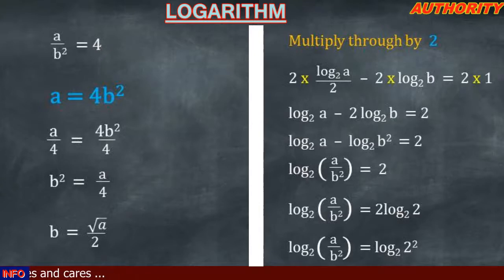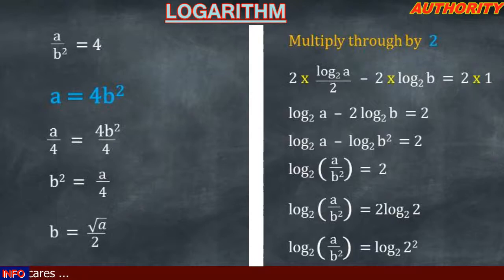So we have evaluated the logarithm and found that a is equal to 4b², and b is equal to the square root of a all over 2. Thank you very much for watching, stay blessed.